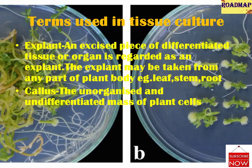Callus: the callus is an unorganized and undifferentiated mass of plant cells. Generally, when plant cells are cultured in a suitable medium, they divide to form callus — that is, a mass of parenchymatous cells.